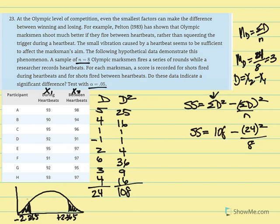And we should get 108. So in your calculator go ahead and take 24 and square it. So we have SS is equal to 108 minus 24 squared divided by 8 gives us 72. And now subtract 72 from 108 and we get 36. So our SS is equal to 36.